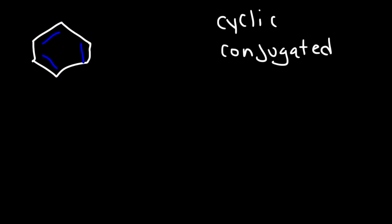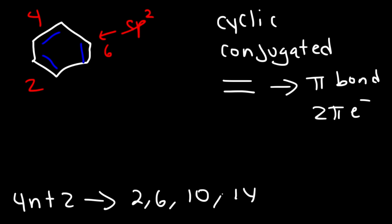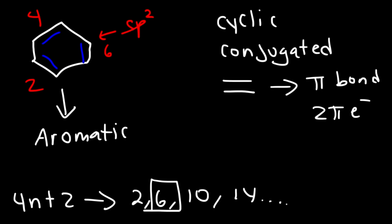Let's start with our most common example: benzene. Is benzene aromatic, anti-aromatic, or non-aromatic? Benzene is cyclic, conjugated, and doesn't have any sp3 carbon atoms — all carbon atoms are sp2 hybridized, meaning each has a p-orbital where pi electrons can move. Every double bond contains a pi bond with two pi electrons, so benzene has 2, 4, 6 pi electrons. It follows Hückel's rule, where aromatic compounds have 2, 6, 10, or 14 pi electrons, and benzene has six. So benzene is an aromatic compound.